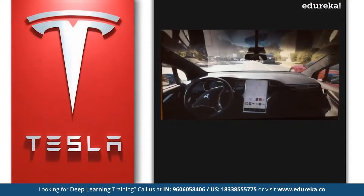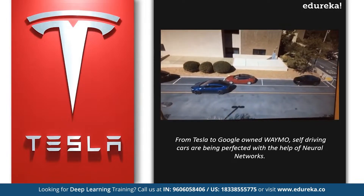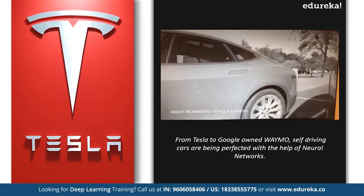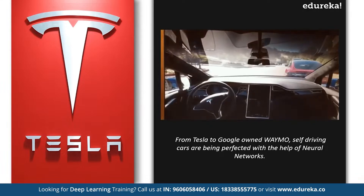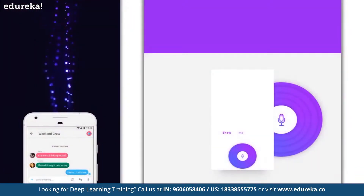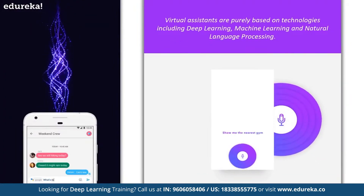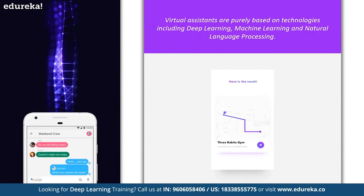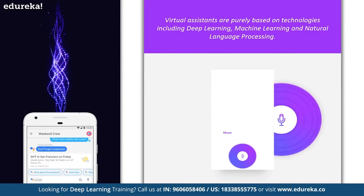Let's not forget to mention automated self-driving cars. Deep learning has played a huge role in this field — from Tesla to Google's Waymo, self-driving cars are being perfected with the help of neural networks. Then of course we have virtual assistants like Siri, Alexa, and Cortana. These assistants are purely based on technologies including deep learning, machine learning, and natural language processing.